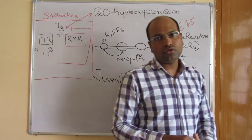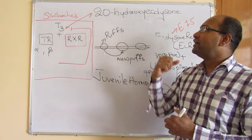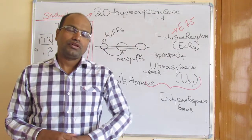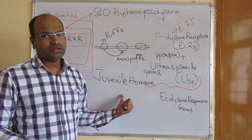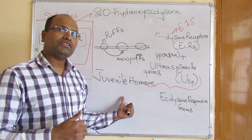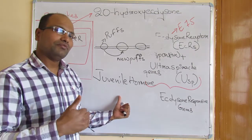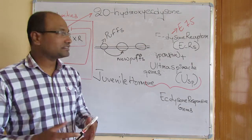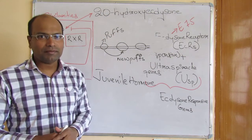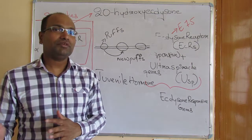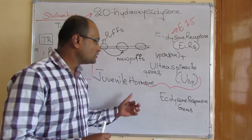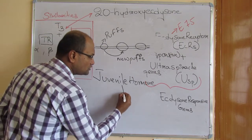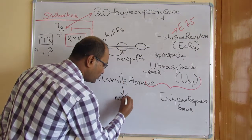Juvenile hormone acts exactly opposite to 20-hydroxy ecdysone. It helps in development from one larval stage to the next larval stage. When juvenile hormone concentration is high, the larval form will molt but give rise to a next, larger larval stage with more segments. If juvenile hormone is absent and 20-hydroxy ecdysone is also absent, the larval stage will not develop into an adult but will instead become a giant larval form.